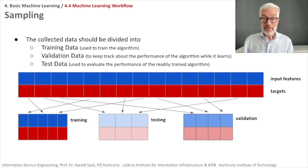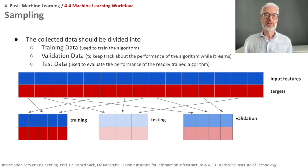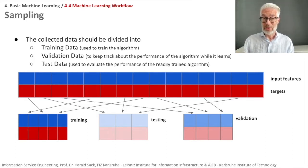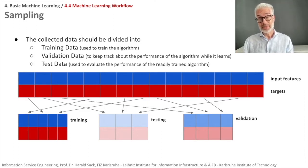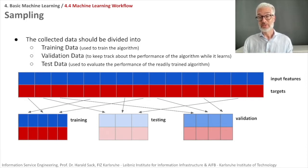The test data set is truly unseen data that has not influenced our algorithm so far, and on it we perform the evaluation of the readily trained model. Typically, for a large data set you take 50% as training data, 25% as validation, and 25% as test data. For a smaller data set, use 60% for training and 20% each for validation and test.